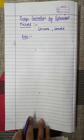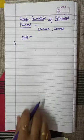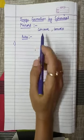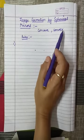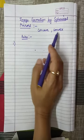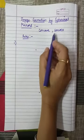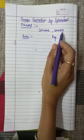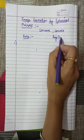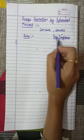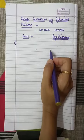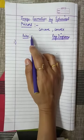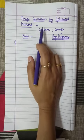Hello students, hope you are all well. Today our next topic for chapter Light is image formation by spherical mirrors. The two spherical mirrors we have to consider are concave mirror and convex mirror, which we studied in the last video. For image formation, we will consider ray diagrams, and for drawing these ray diagrams there are some particular rules.